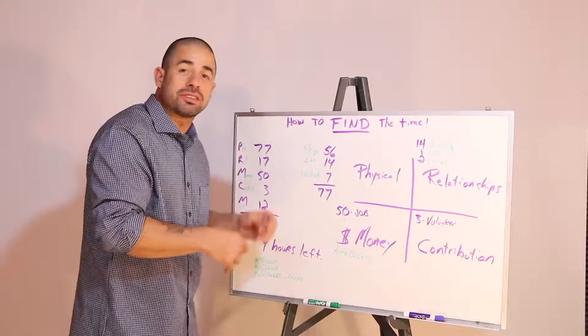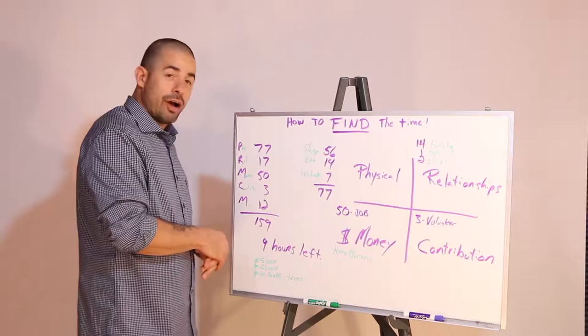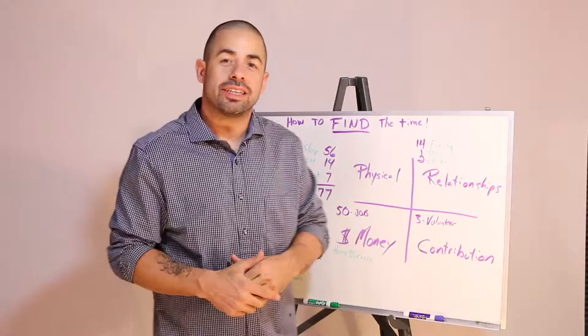Now I'll give you an extra 12 hours for miscellaneous just for the extra stuff, paying bills and different things like that, an extra couple hours a day. And that's a lot. And so you think that adds up to 159 hours for the week. You know how many hours in the week there are? 168.